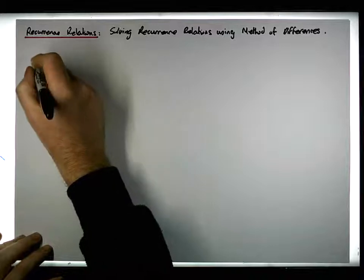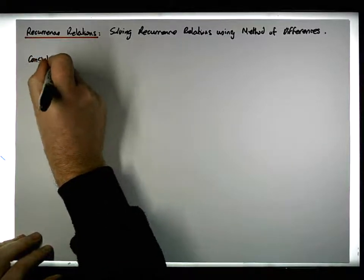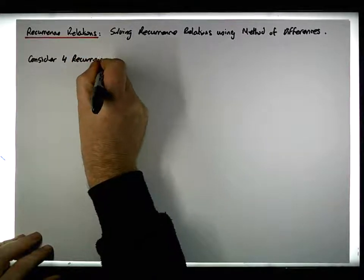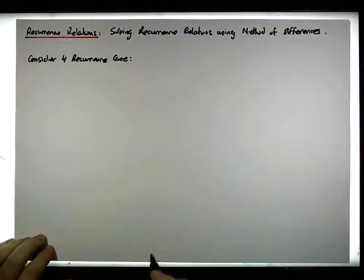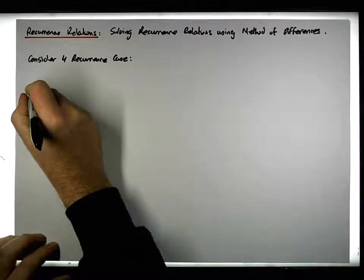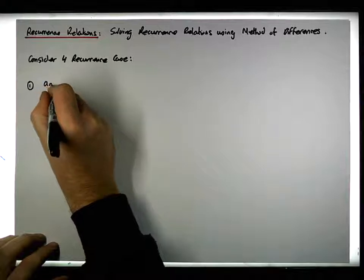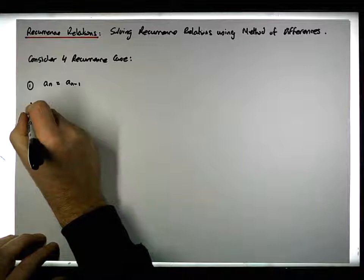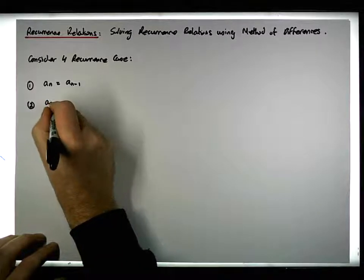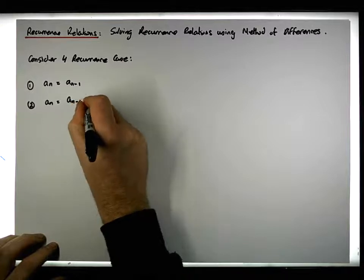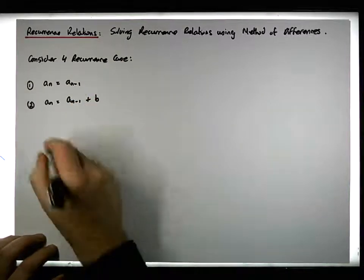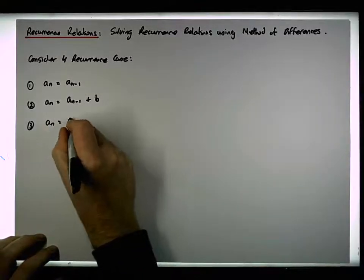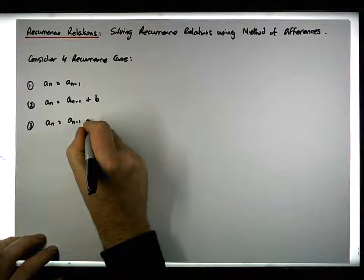The four recurrence cases we're going to consider are: first, the nth term is simply equal to the previous term a(n-1). Second, the nth term is equal to the previous term a(n-1) plus some constant. Third, the nth term is equal to the previous term a(n-1) plus n.